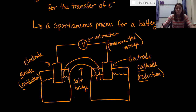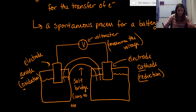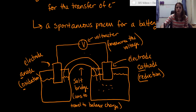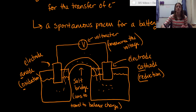The salt bridge basically allows for ions to travel in order to balance charge. You begin to build up charge on one side or the other, and the ions sitting inside the solution are able to transfer through the salt bridge to the other beaker to make sure you don't have a buildup of charge.